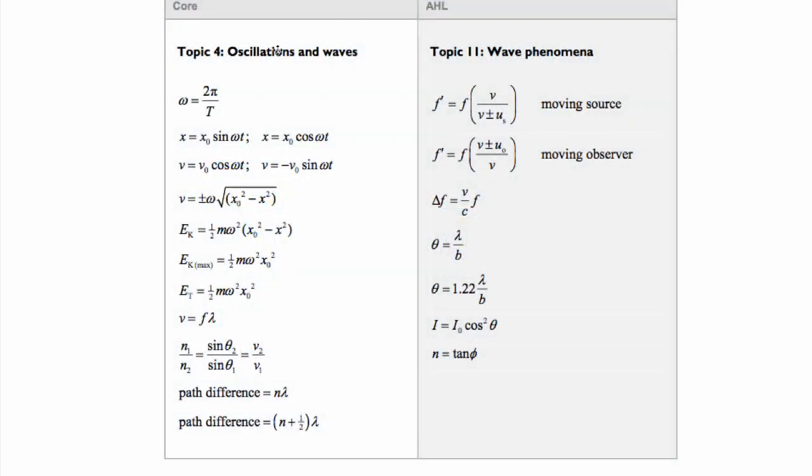Now in physics SL topic 4 we have oscillations and waves. Now what I'm going to show you here, maybe I'll write this in red as well. We've got these first few things right here and these are all having to do with simple harmonic motion. Now we often call this, the short form for this is SHM. So if you have something undergoing simple harmonic motion then you have all these different equations you might use.